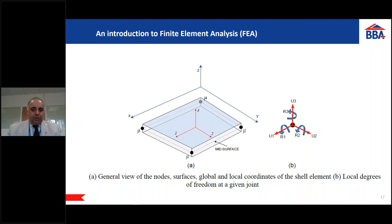Here, showing the degrees of freedom: each node can travel in three directions and rotate around three axes. Not all finite element analyses require all these degrees of freedom — you might restrain or constrain them as needed. The global directions X, Y, and Z are modified to local directions 1, 2, and 3. The finite element platform automatically transfers global directions to local directions and local coordinates to global coordinates as required.